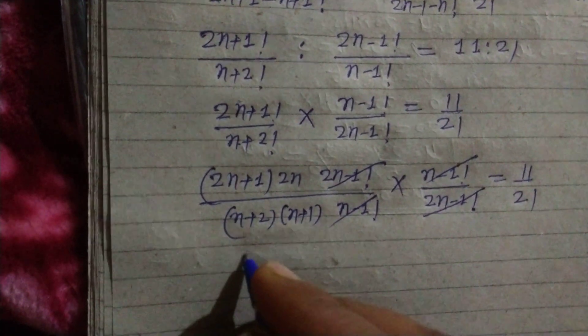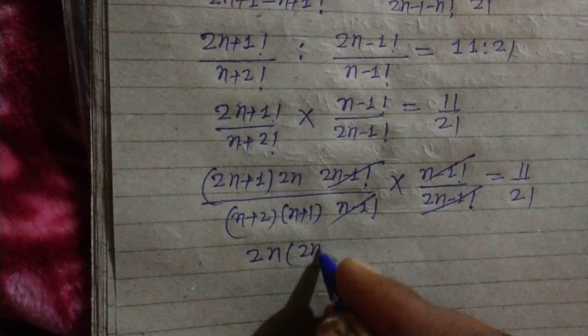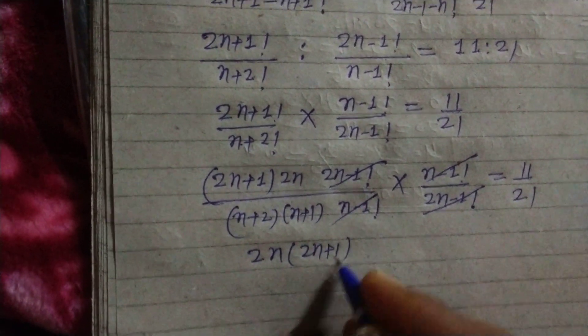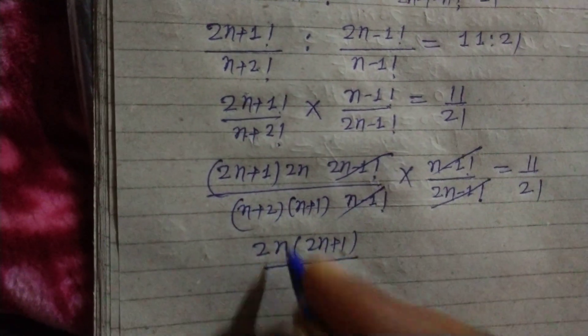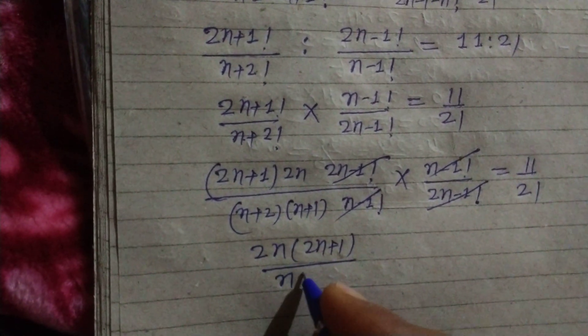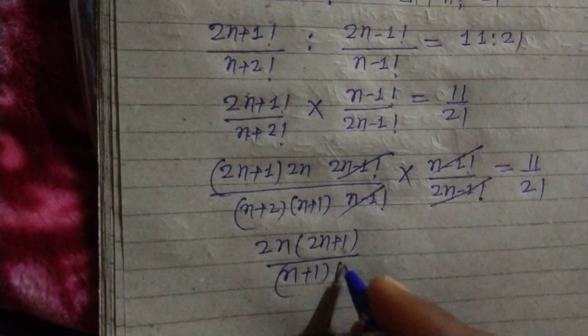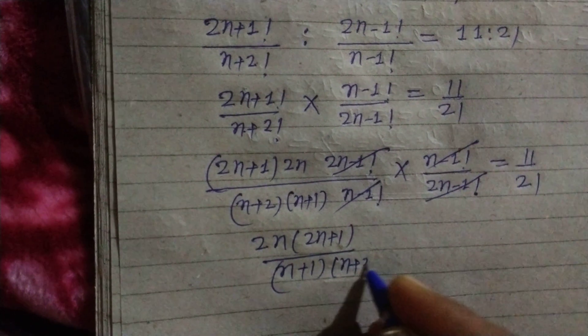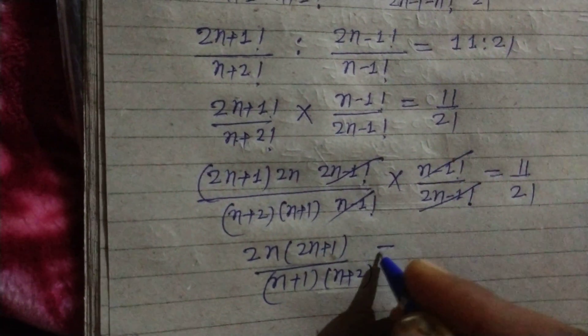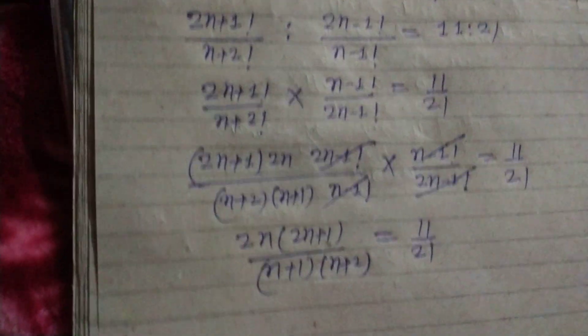After cancellation, we get 2n · (2n+1) upon (n+1) · (n+2) equal to 11 upon 21.